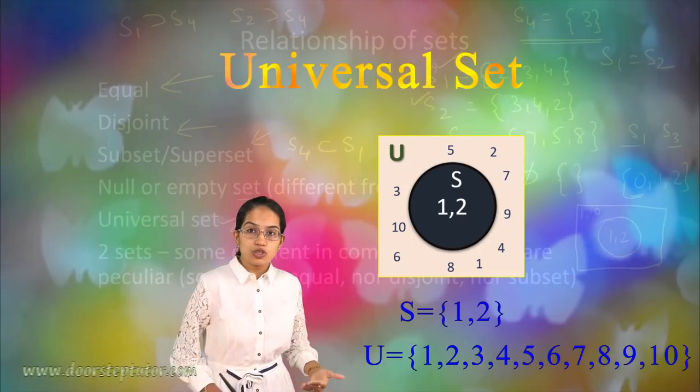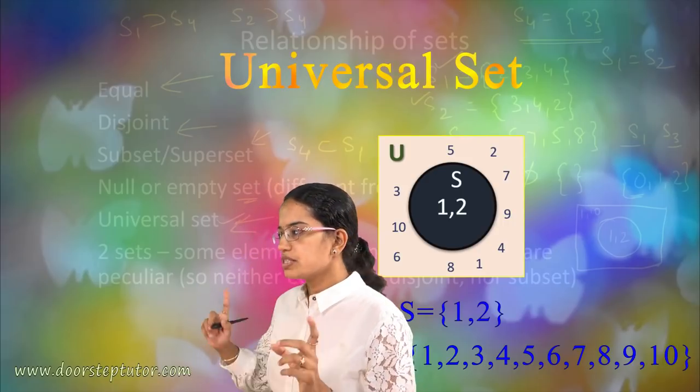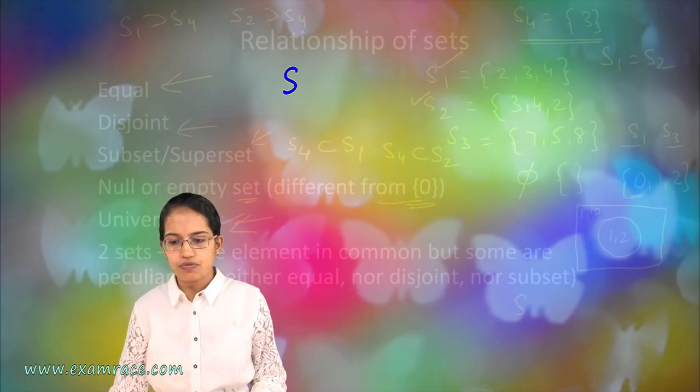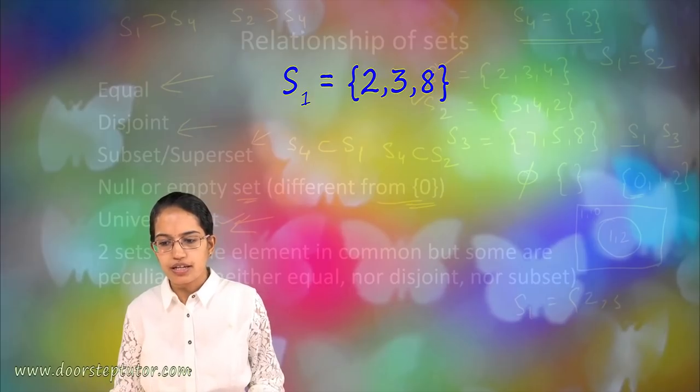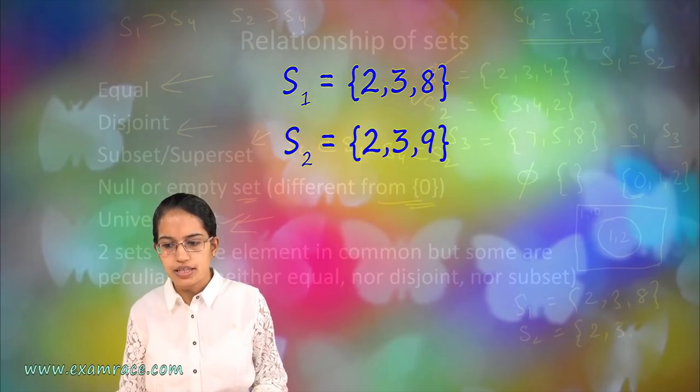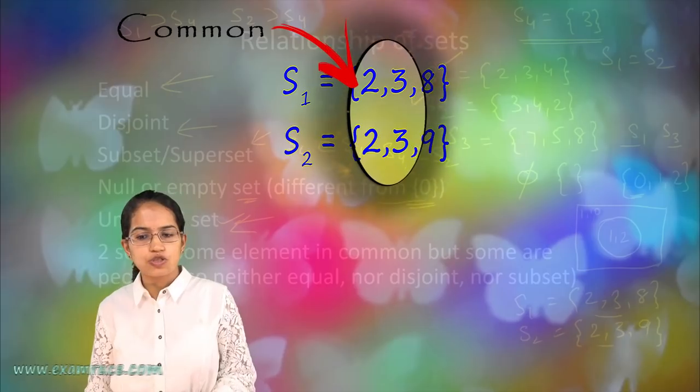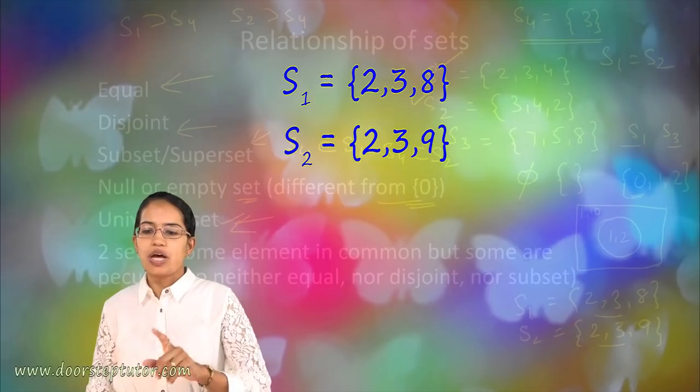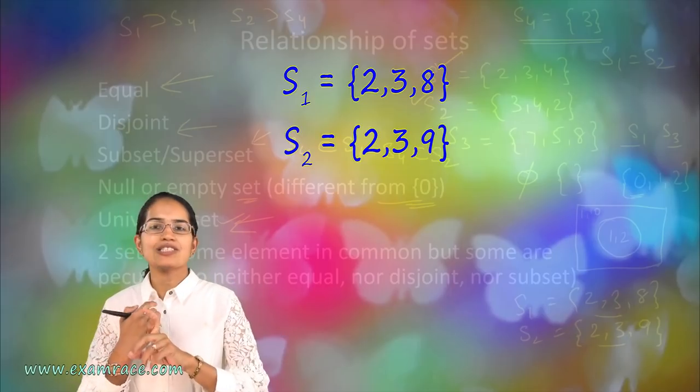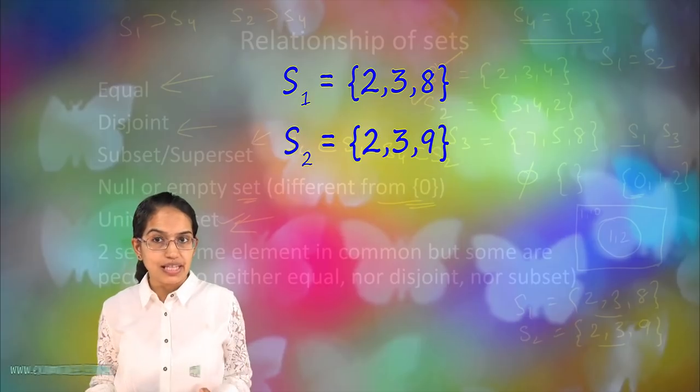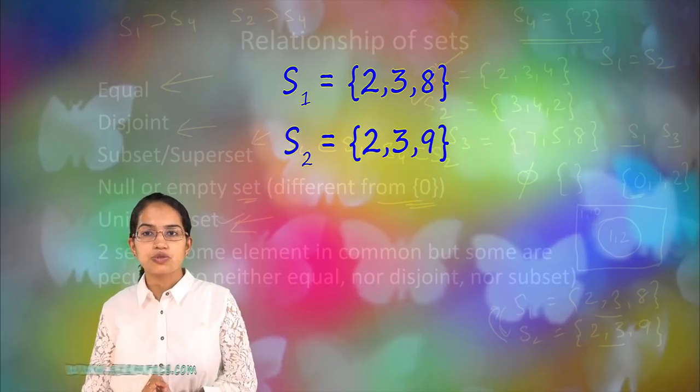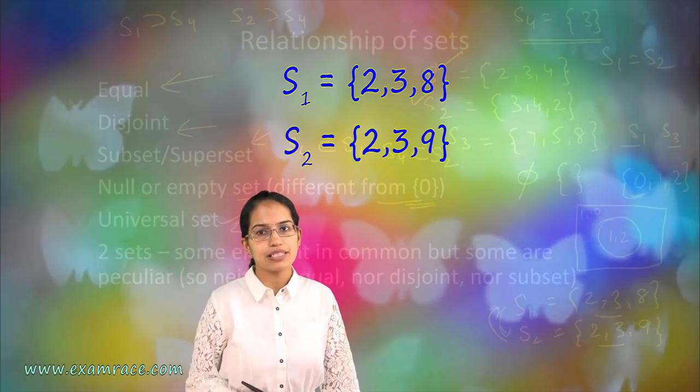There can be also sets where you have some elements which are common, some elements which are unique. Let's say I have S1 is equal to 2, 3, 8. Here some elements are common that's 2, 3 but 8 and 9 are unique. Those are peculiar to S1 and S2. I cannot say these two sets are equal. I cannot say these two sets are disjoint because there is something that's common. I cannot say S2 is a subset of S1 or S1 is a subset of S2 because there are different peculiar elements that are present.